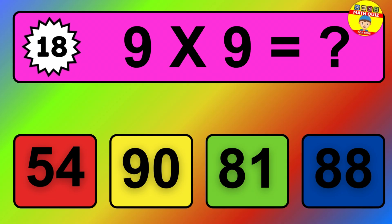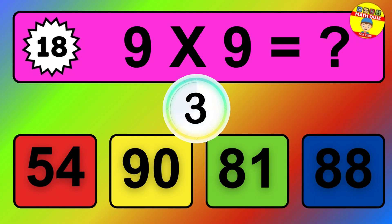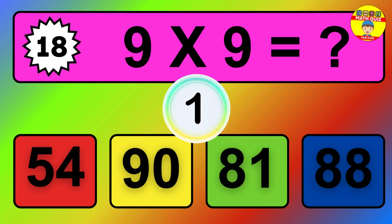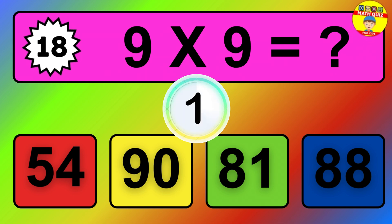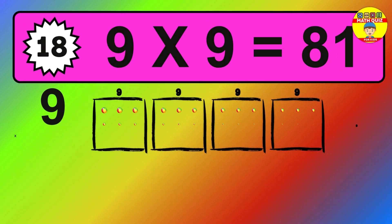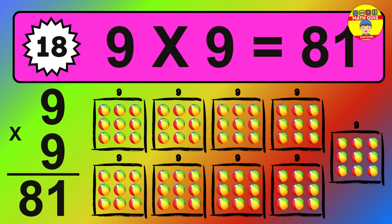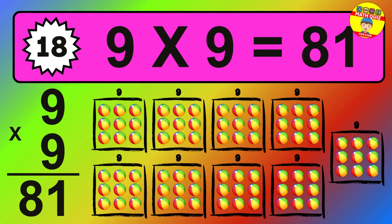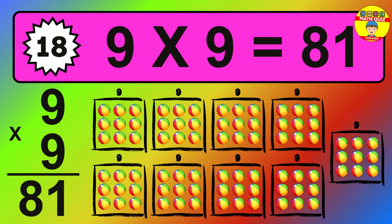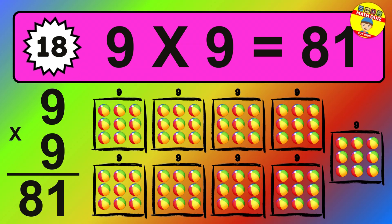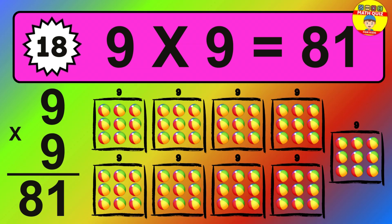Question eighteen: nine times nine equals what? The answer is: nine times nine is 81. To calculate, we have nine groups with nine balls each one. So how many balls do we have? 81 balls.